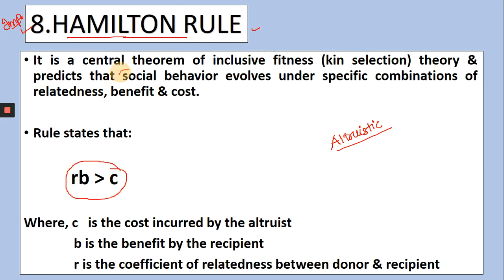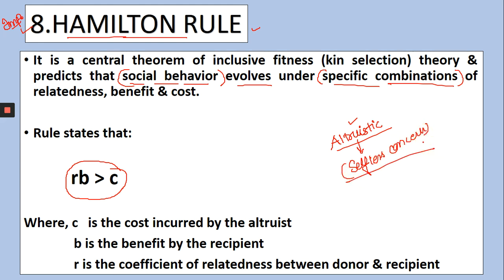What this rule states is that the social behavior of any organism, which evolves, evolves only under specific combinations and conditions. When a behavior like altruistic behavior — which we also call selfless concern — evolves, there are specific conditions and combinations required. I have told you about this many times before: not caring about yourself, protecting your relatives, protecting your offspring and family members — this behavior is more commonly seen in social animals. Hamilton stated that this rule is observed only under specific conditions: relatedness (R), benefit (B), and cost (C), where R×B should be greater than C.